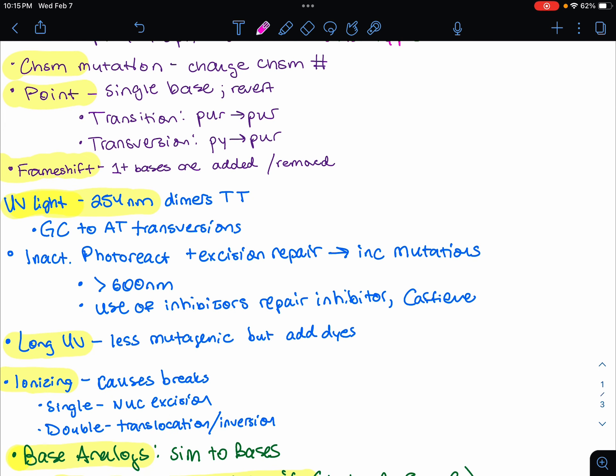A chromosome mutation could be one of these types of mutations that occur. We have a change in the number of chromosomes. A point mutation is a change in a single base, where we could have a transition, which is a purine to another purine, or a transversion, which is a pyrimidine to purine. These could actually revert. A frameshift mutation, however, is when one or more nucleotides are added or deleted.